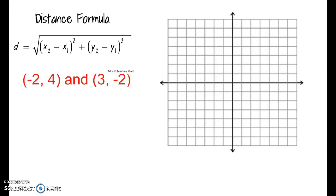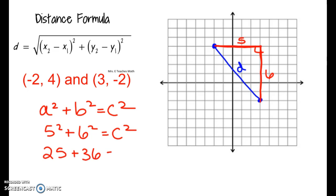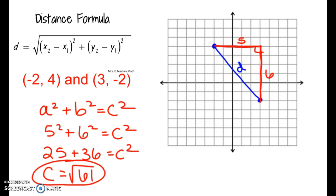Let's go through another problem. Let's say we have (-2, 4) and (3, -2) — make sure you're writing these down as I go. We want to find this distance. It doesn't matter which way I make my triangle, above the line or below the line — I'm still going to end up with those same x and y distances. I count 1, 2, 3, 4, 5 for the horizontal and 1, 2, 3, 4, 5, 6 for the vertical. Setting up the Pythagorean theorem: 5² + 6² = c², so 25 + 36 = c², and I end up with the square root of 61.